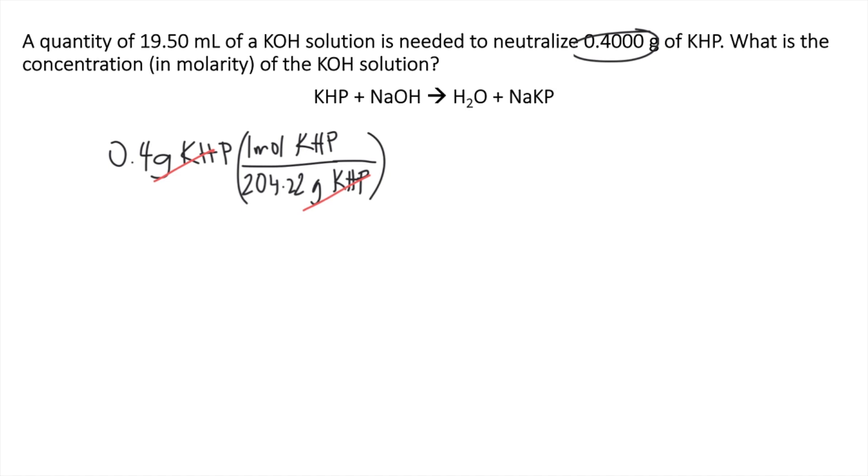Looking at the balanced equation, you can see that for every 1 mole of KHP, it reacts with 1 mole of NaOH. The molar ratio is 1 to 1. So you write it in your next conversion factor: 1 mole of KHP reacts with 1 mole of NaOH.